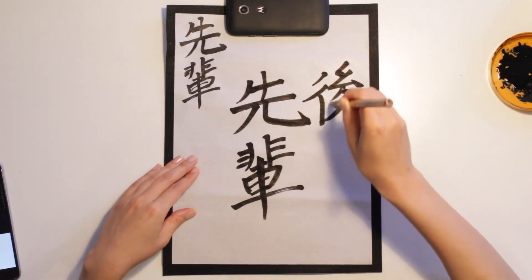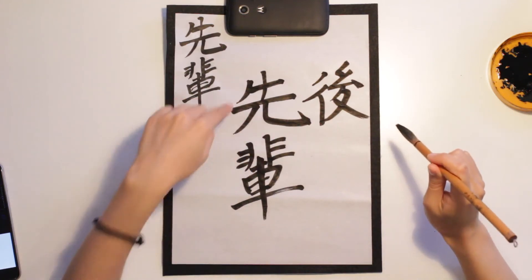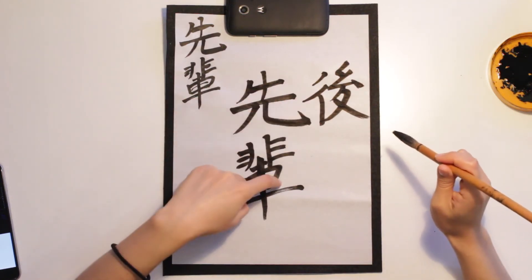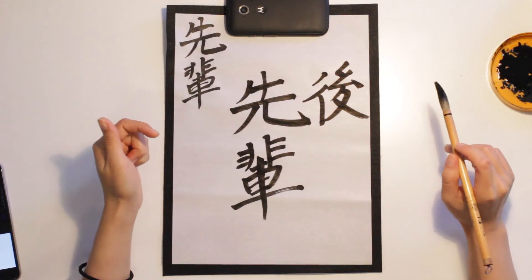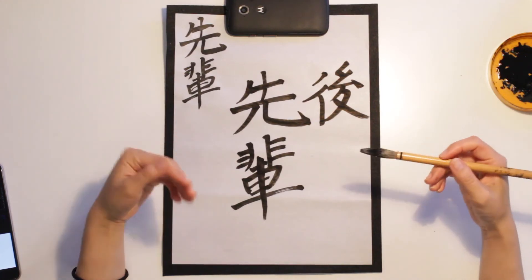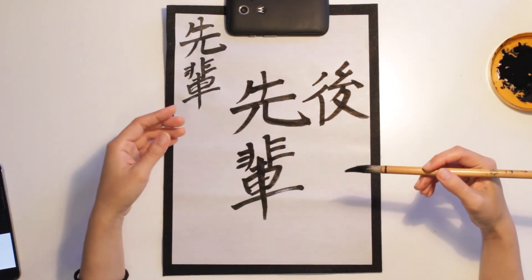Senpai, kouhai. But when you call someone who's older than you, you say senpai.